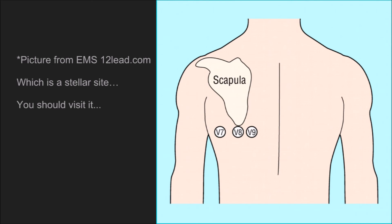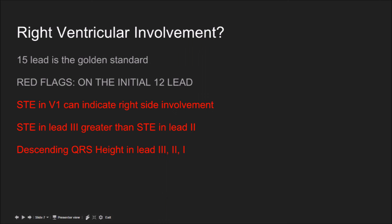There are red flags on a normal 12-lead that indicate right ventricular involvement. If you see ST elevation in V1, that's a strong indicator of significant right ventricular involvement. If ST elevation in lead 3 is greater than in lead 2 — more millimeters — that also suggests RV involvement. Additionally, if you see descending QRS height across leads 3, 2, and 1 — tallest in lead 3, next in lead 2, shortest in lead 1 — that's another indicator. Either way, run the 15-lead, but these are good things to watch for.